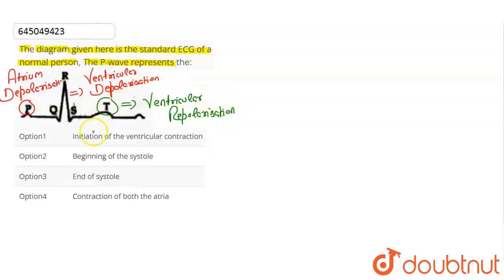So here P wave is asked. Here the beginning of the systole. Initiation of the ventricular contraction is wrong.